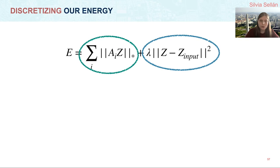Our energy has two components, and surprisingly both of them are convex. In the green circle, we are compositing a linear function, the product of Ai times Z, which is convex, with a nuclear norm, which is convex, with a sum over every pixel, which is also a convex function. So since composition preserves convexity, then the green circle is altogether a convex operation.